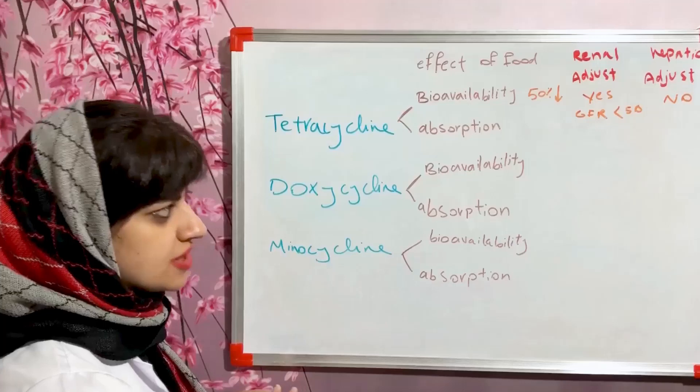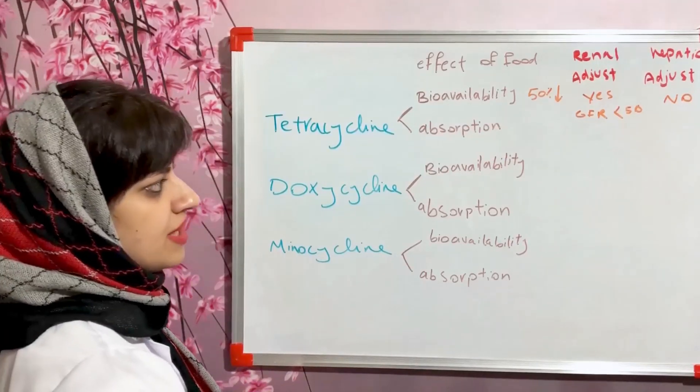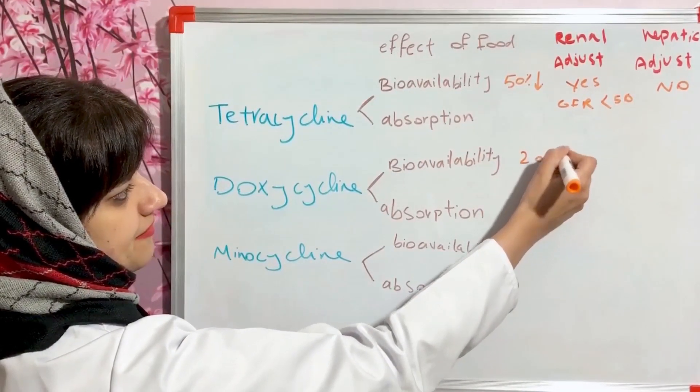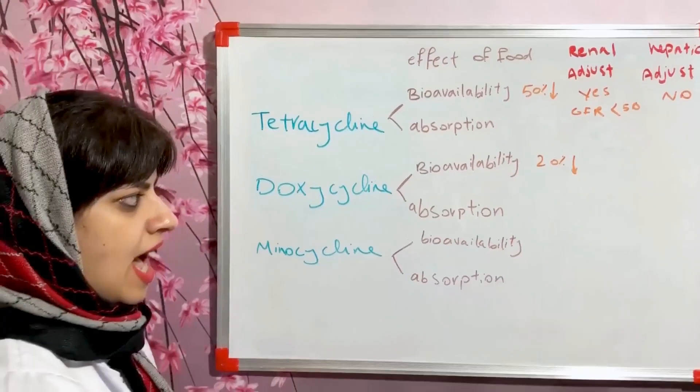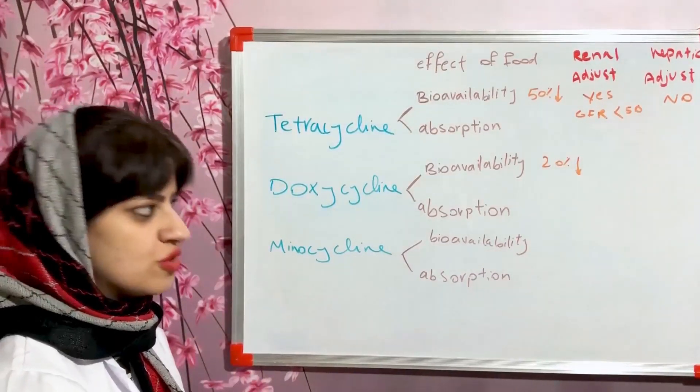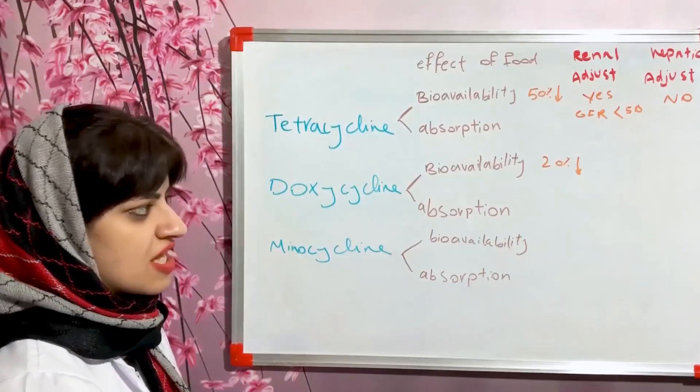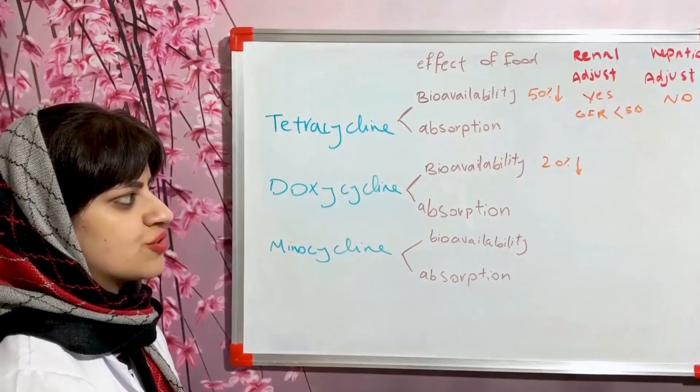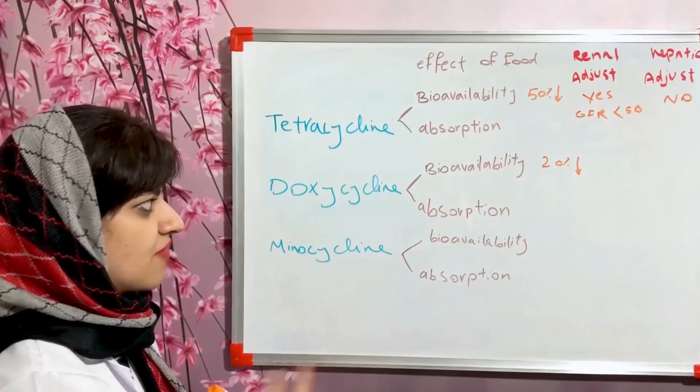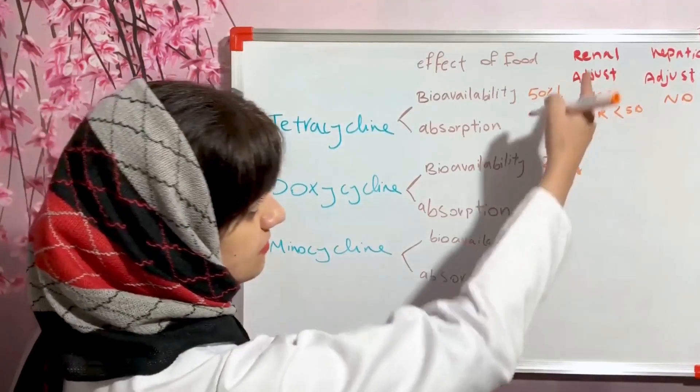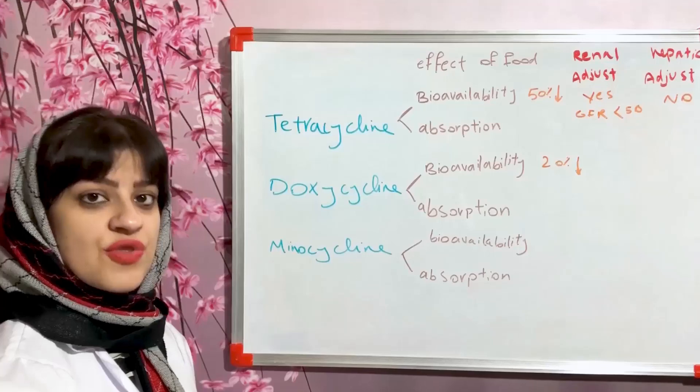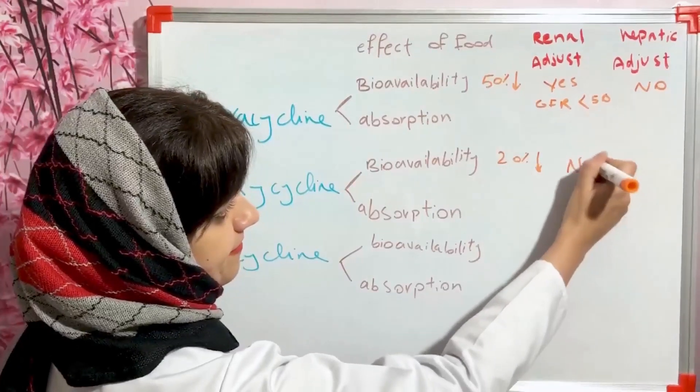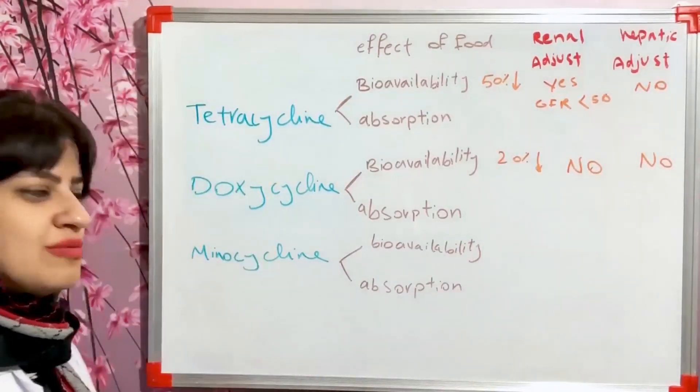Doxycycline: food taken with food reduces the bioavailability of doxycycline by around 20 percent. However, taking doxycycline with food does not affect the absorption of doxycycline clinically. It is recommended to take this with food in order to reduce the gastrointestinal side effects of doxycycline. Doxycycline does not need any dose adjustment, neither in renal failure nor in hepatic failure. So it's a cool medication.